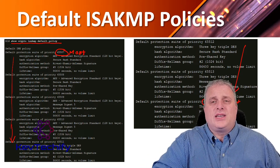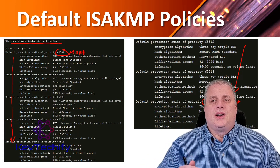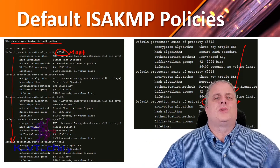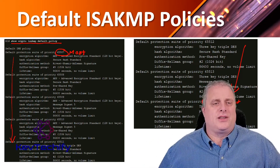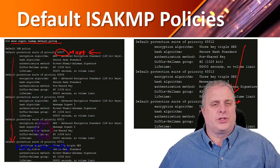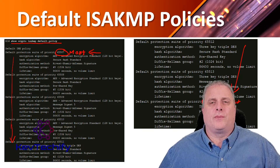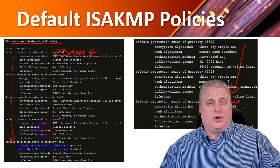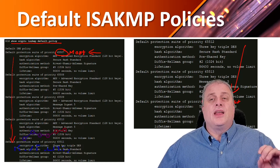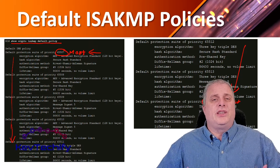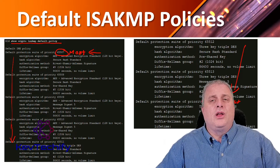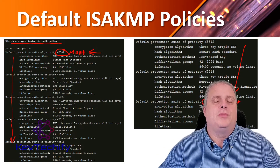If no other policy has been defined by the administrator, R1 will attempt to use the most secure default policy — 65,507. If R2, on the other router, has a matching policy, then R1 and R2 can successfully negotiate that IKE phase one ISAKMP tunnel without any configuration by the administrator.